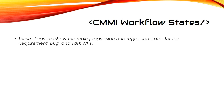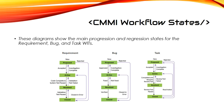For CMMI workflow states, the diagrams show the main progression and regression states for the Requirement, Bug, and Task work item types. For a Requirement: once it is new, it is Proposed; then it goes into Active after it's been accepted; then Resolved after code is complete and system tests have passed; then Closed after the validation test has passed. If closed in error it can follow a path back, or go straight back to Active. If it's Proposed and rejected, it goes straight to Closed.